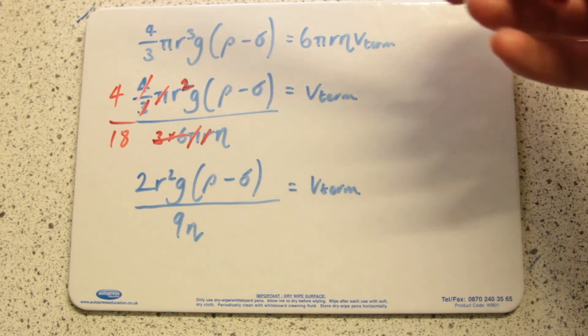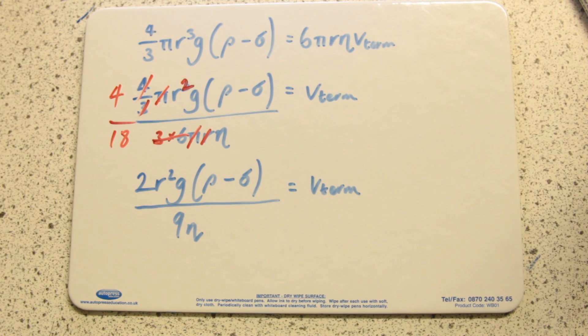The terminal velocity is proportional to r². Doubling the radius will quadruple the terminal velocity.